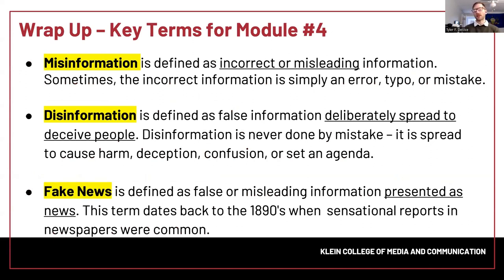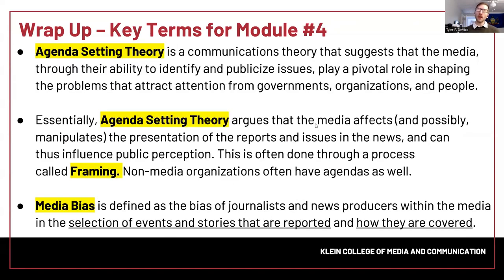That concludes module four on fake news, misinformation, disinformation, and media bias. Here are the key terms: misinformation is just incorrect — sometimes a typo, often accidental. Disinformation is deliberately spread wrong information to deceive people. Fake news is false or misleading information presented as news, going all the way back to the 1890s. The agenda setting theory is the idea that the media can choose what they cover and therefore set an agenda. Framing is how they do that — using specific words, images, or portions to change perception without changing the facts. Media bias is how news sources and journalists can be biased one way or the other, showing that through what they cover and how. Media bias usually relates to agenda.